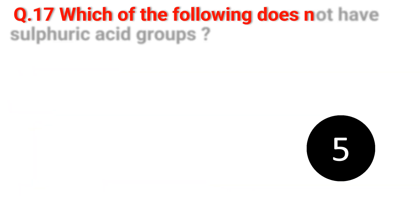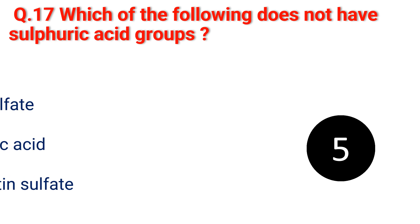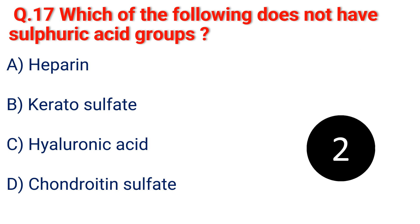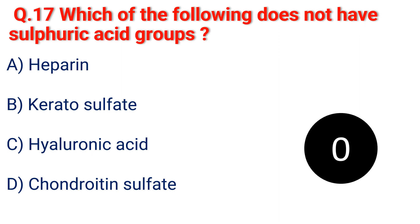Question 17. Which of the following does not have sulfuric acid groups? A. Heparin. B. Keratosulfate. C. Hyaluronic acid. D. Chondroitin sulphate.